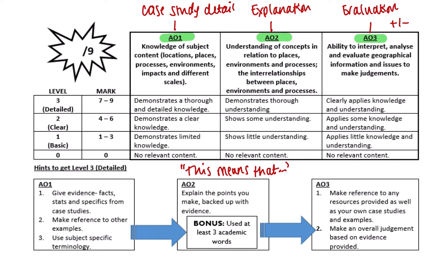For AO3, that's your evaluation. If the question says to use a figure, check back and make sure you have. Most importantly, ensure you've got an overall judgment — that normally comes in the form of a conclusion. On a nine marker I'm not thinking about a massive paragraph; just a small couple of sentences at the end to round off the answer. Quite often the way you access nine out of nine is by having that overall judgment. Without a conclusion you do limit yourself.